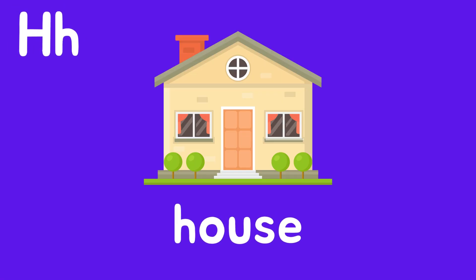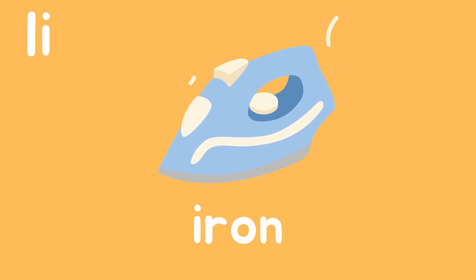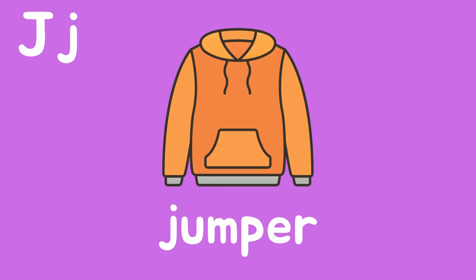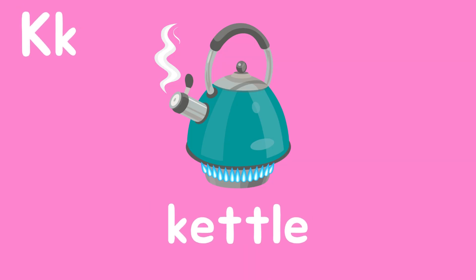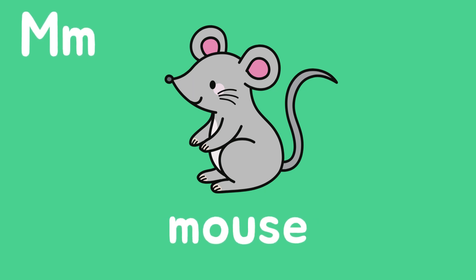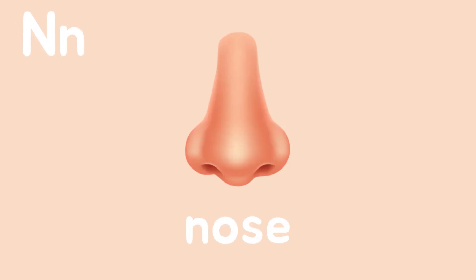H is for House. I is for Iron. J is for Jumper. K is for Kettle. L is for Lemon. M is for Mouse. N is for Nose.